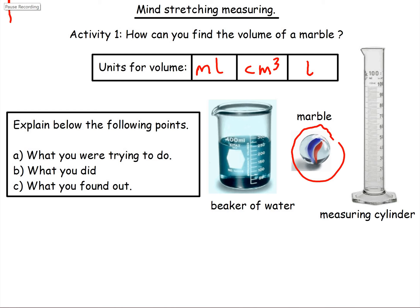Okay, what were you trying to do? We're trying to find the volume of the marble. But what did you do? Well, what you could do is pour, say, 20 centimetres cubed of water from the beaker into the measuring cylinder. Then you add the marble and you get a reading of 22 centimetres cubed. All you have to do then to work out the volume of the marble is 22 take away 20 gives us 2 centimetres cubed. The volume of the marble is 2 centimetres cubed.